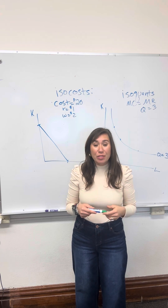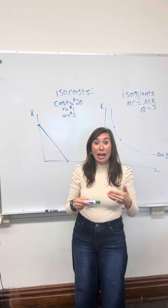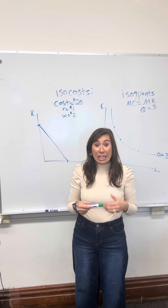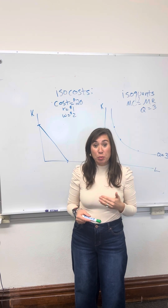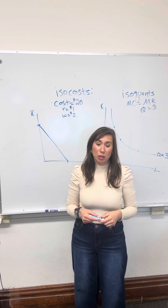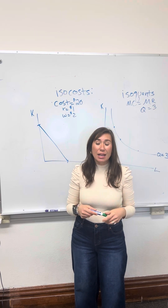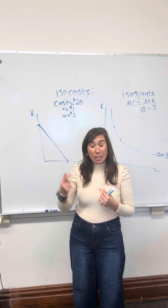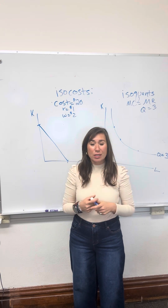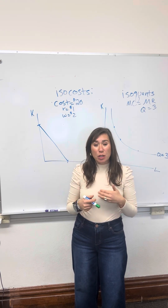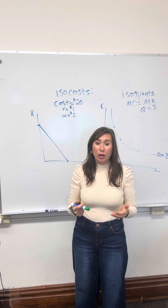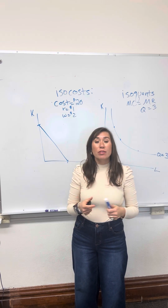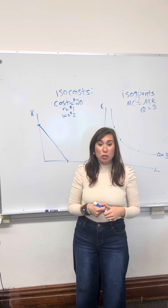The next step is to find how much capital and labor they need in order to produce that profit-maximizing quantity in a way that minimizes their costs. For that, we need isocost and isoquant diagrams in order to project out the cost-minimizing way of producing the quantity they want to produce.